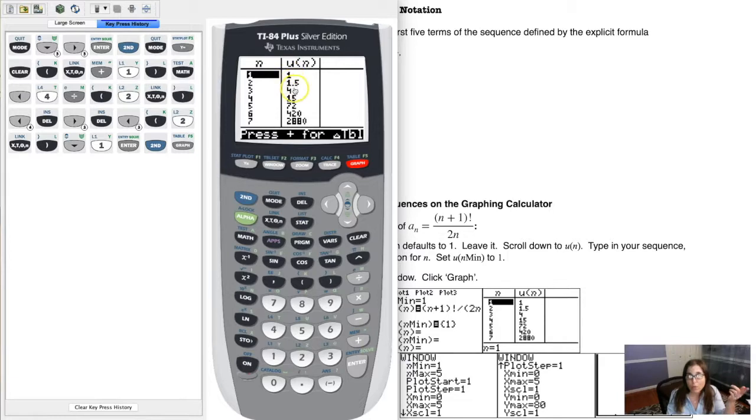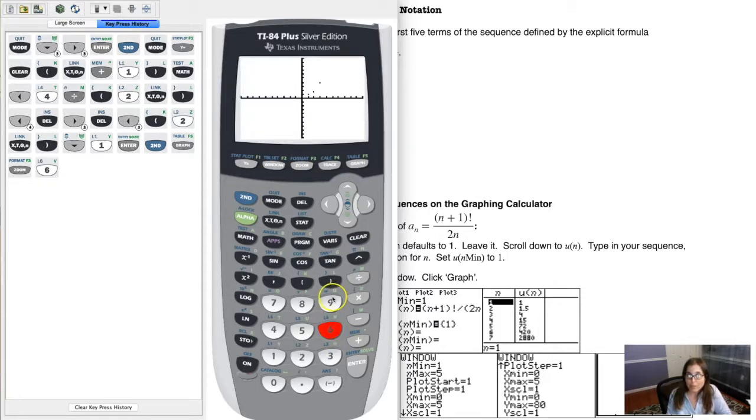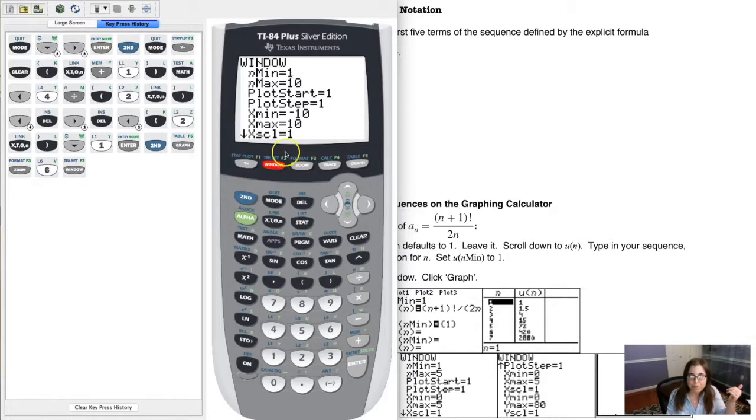So let's go to our table and let's just check our work. And we got these numbers, right? We got 1, 1.5, 4, 15, and we ended with 72. If we had gone one more iteration, if we had found a sub six, it would have been 420. So I just want to show you, let's hit zoom six. I want you to see the graph and then we'll mess with the window just a little bit. So when I hit zoom six, I'm not sure if you could just see those little points light up.